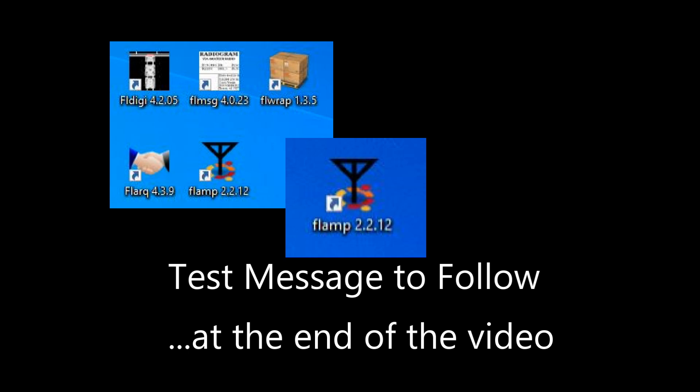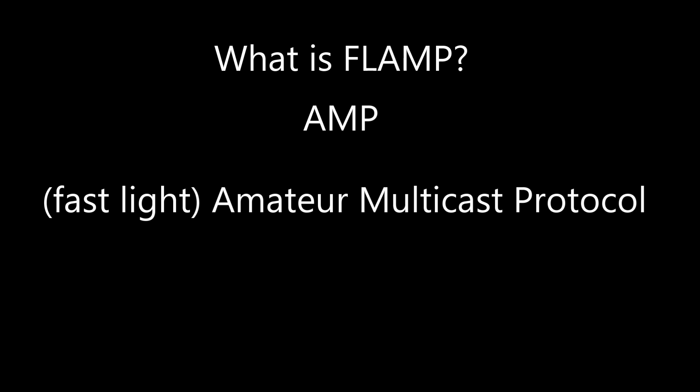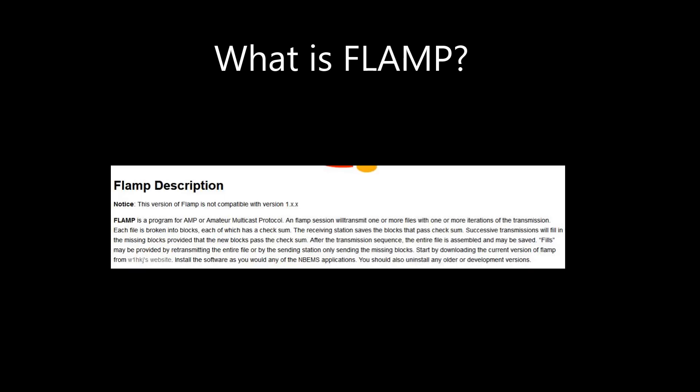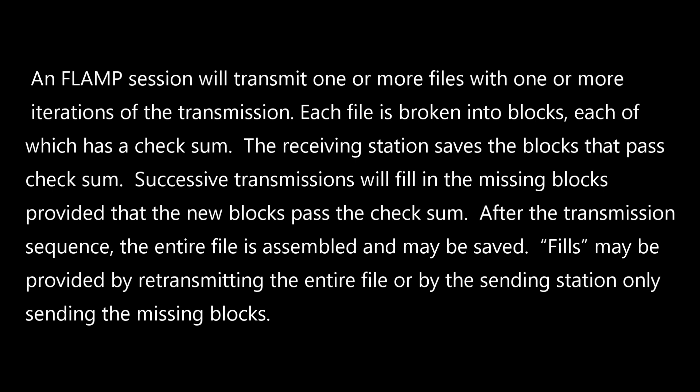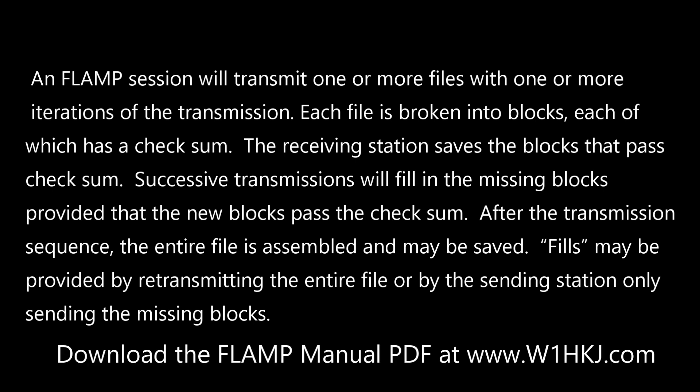Let's address what FLAMP is exactly and why we use it. FLAMP is a program for AMP, the Fast Light Amateur Multicast Protocol. From the FLAMP manual, which can be downloaded as a PDF on the W1HKJ download web page, an FLAMP session will transmit one or more files with one or more iterations of the transmission. Each file is broken into blocks, each of which has a checksum. The receiving station saves the blocks that pass checksum. Successive transmissions will fill in the missing blocks provided that the new blocks pass the checksum. After the transmission sequence, the entire file is assembled and may be saved.